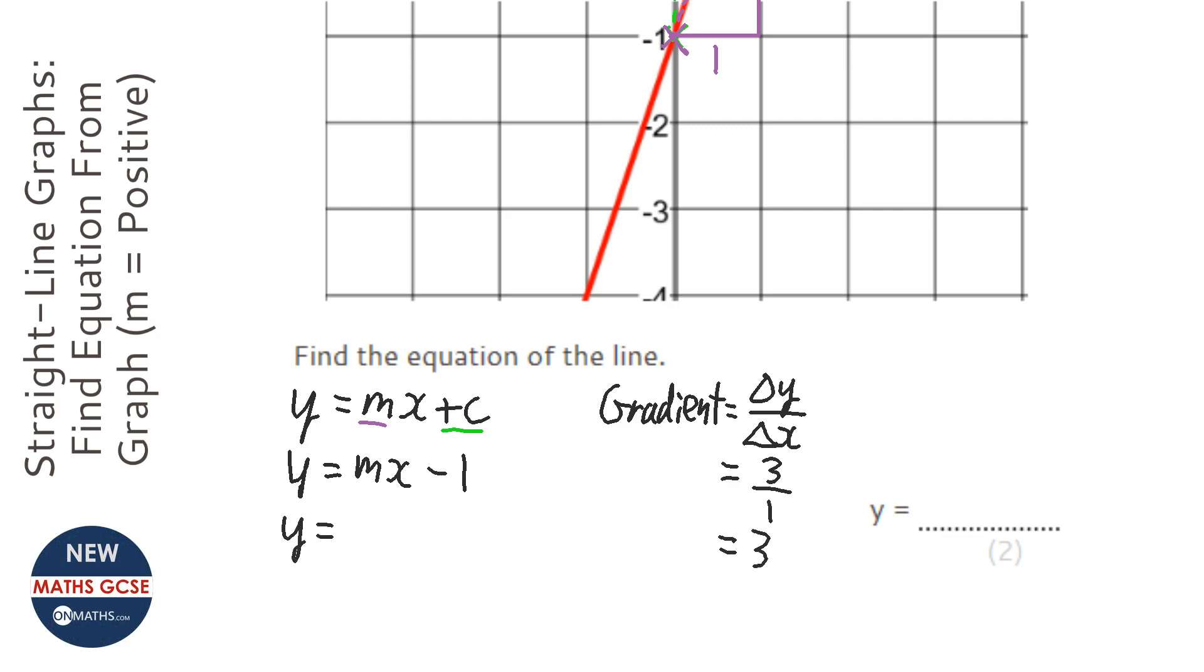So we've got y equals 3x minus 1. Our equation is y equals 3x minus 1.